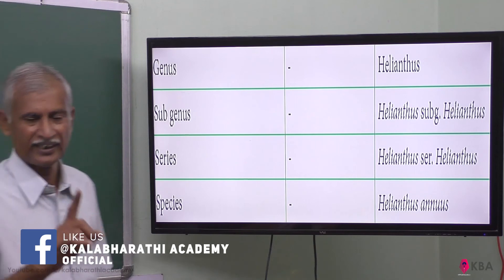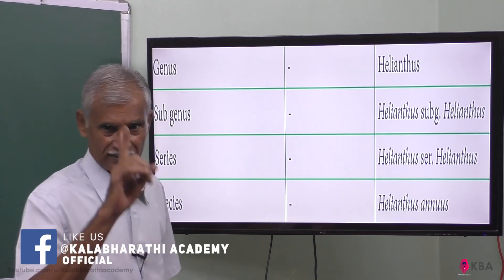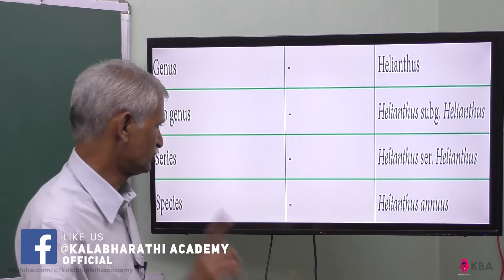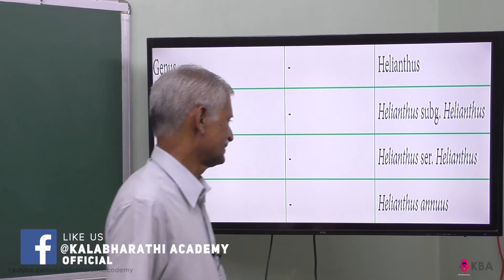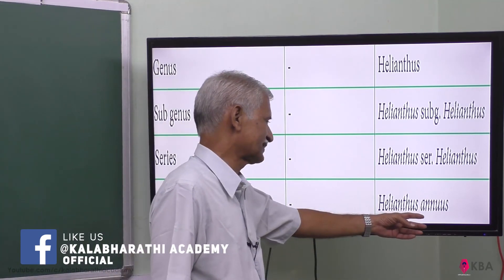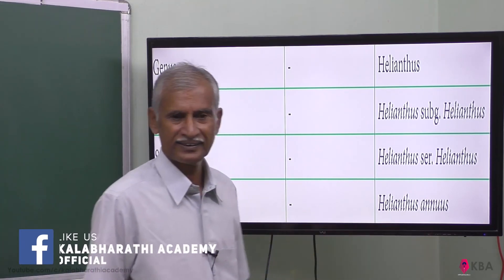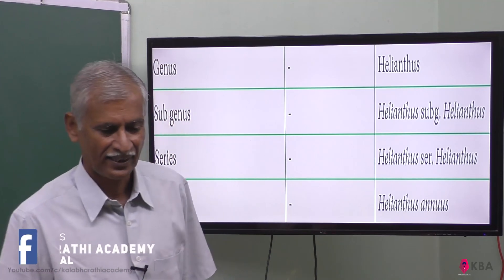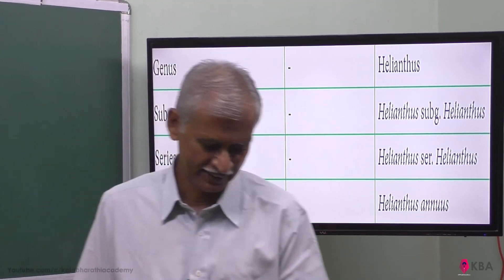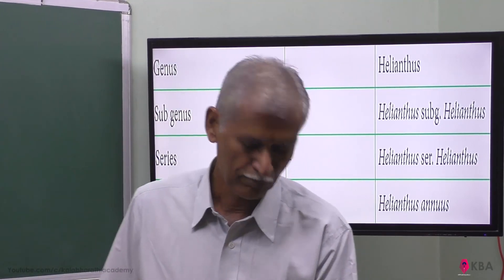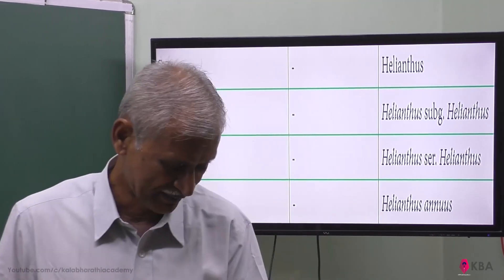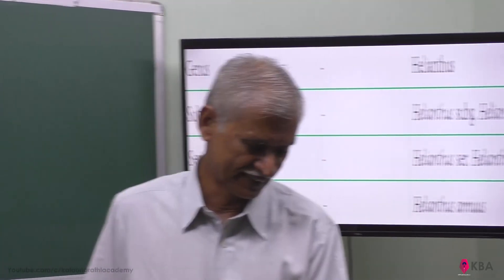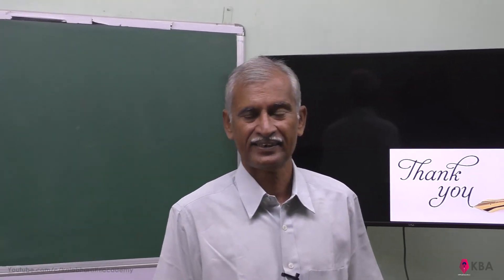The last level is species — a single name for a plant. That is Helianthus annuus. This is how botanical names are given using this method. So we will meet again in the next class. Thank you, students.